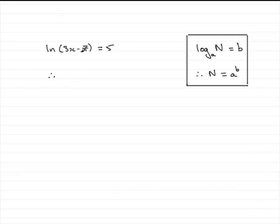So that means that our number, 3x minus 7, is equal to E to the power 5.